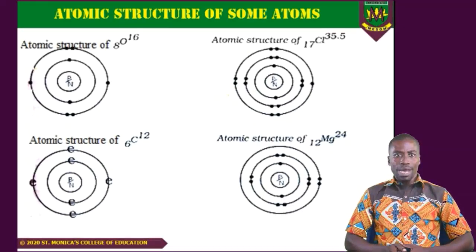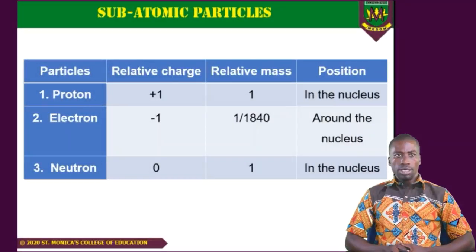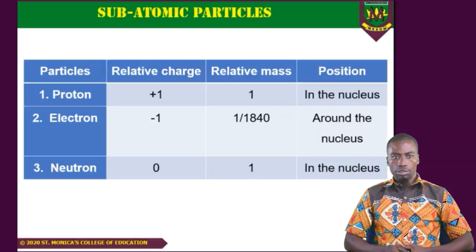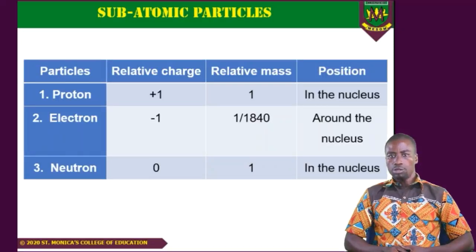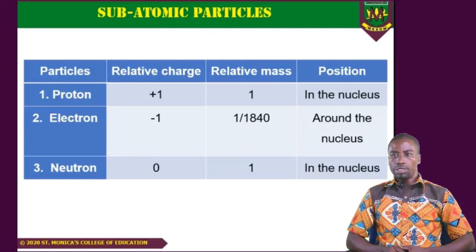Now we look at the subatomic particles. Proton, electron, and neutron are the particles that make up the atom. Their charges are: proton +1, electron −1, and neutron 0 (neutral). Their relative masses are: proton = 1, electron = 1/1840, and neutron = 1. This means you need 1840 electrons to give the mass of one proton. The mass of the atom is therefore concentrated inside the nucleus, where the protons and neutrons reside.